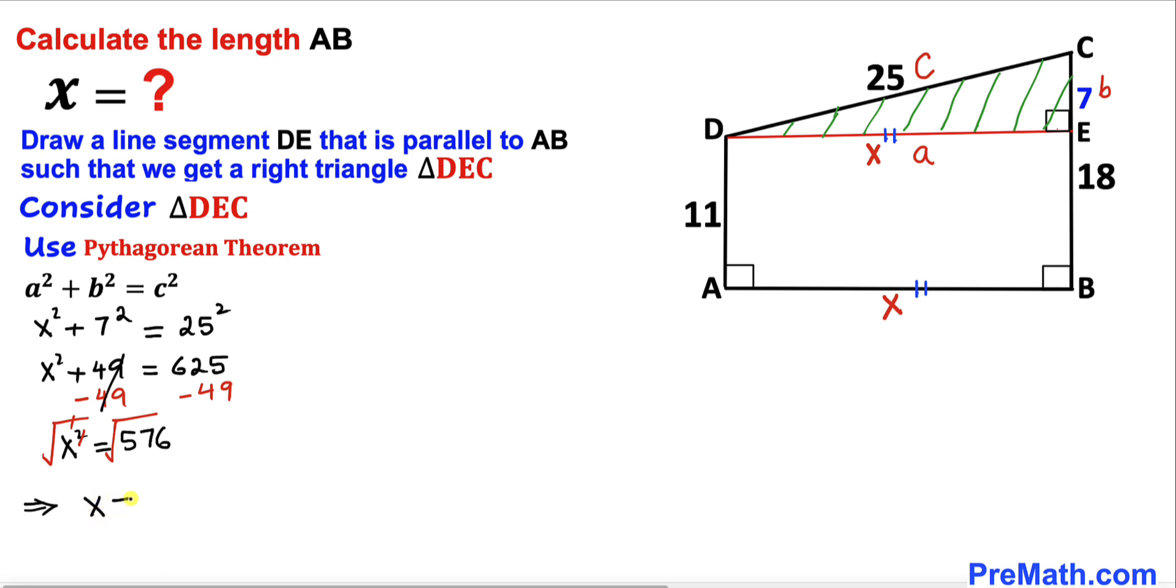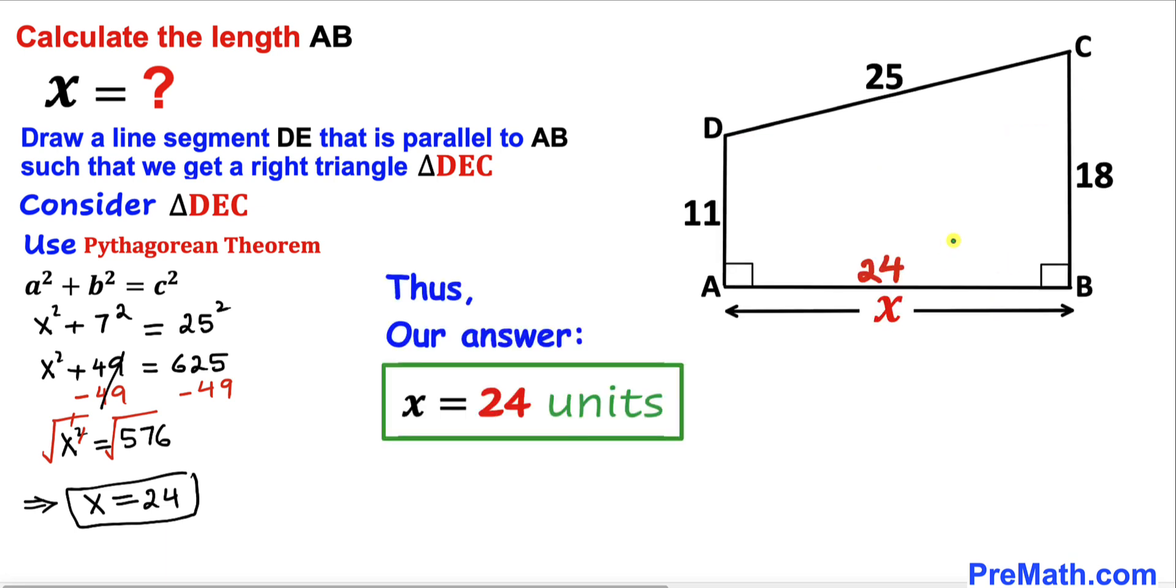Therefore our x value turns out to be 24 units, and this is a positive value since our side length is always positive. Therefore this x value turns out to be 24 units. Since this is same as this one, so this has got to be 24 units as well. Thus our x value turns out to be 24 units. Thanks for watching and please don't forget to subscribe to my channel for more exciting videos. Bye.